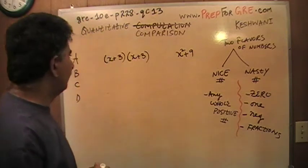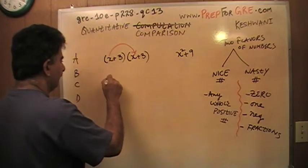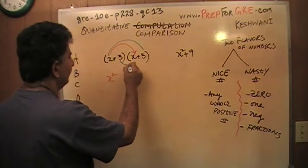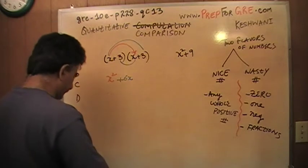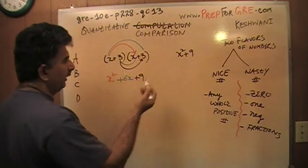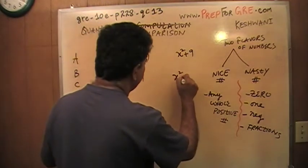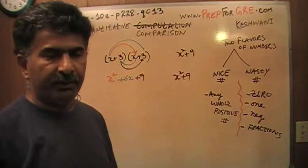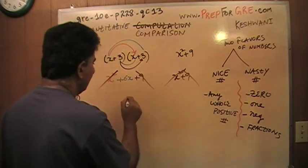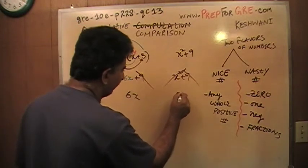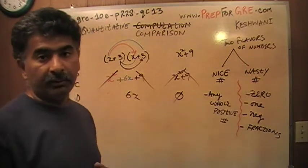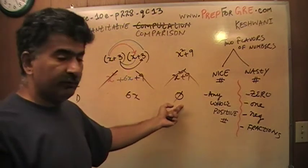Another way to solve this problem is algebraically. Expanding (x+3)(x+3): x times x is x squared, x times 3 is 3x, 3 times x is 3x giving 6x, and 3 times 3 is 9. On the other side you have x squared plus 9. Since x squared appears on both sides it plays no role, and since 9 appears on both sides it plays no role. Basically, you're comparing 6x versus 0.